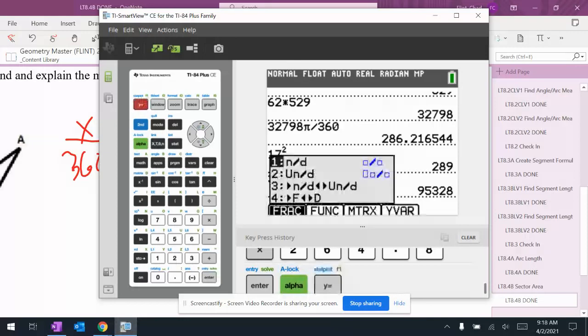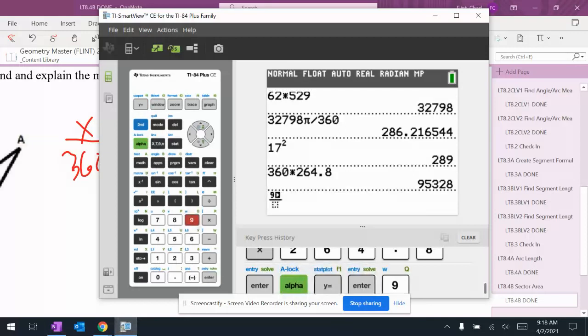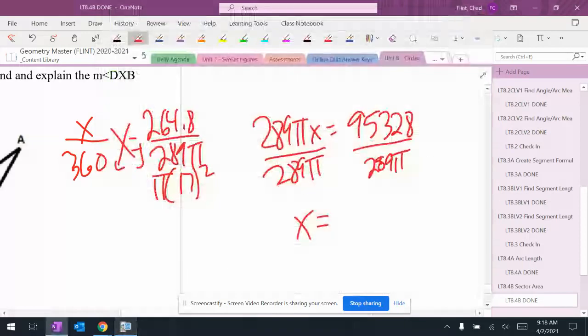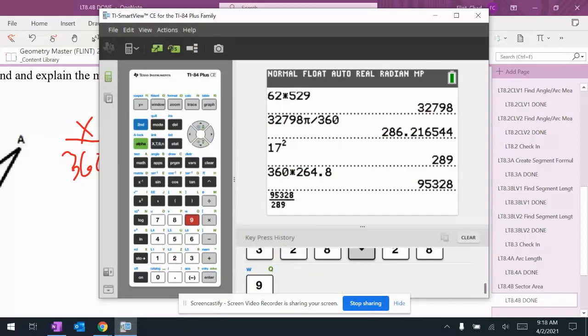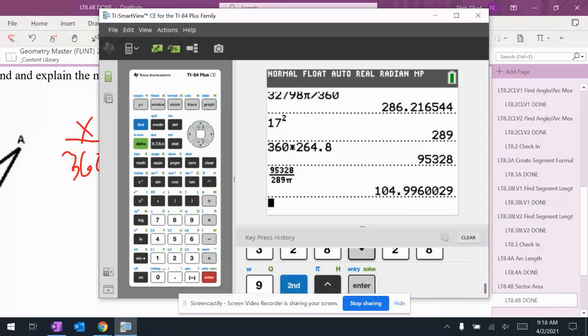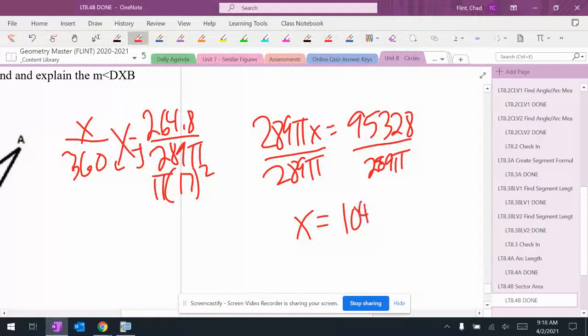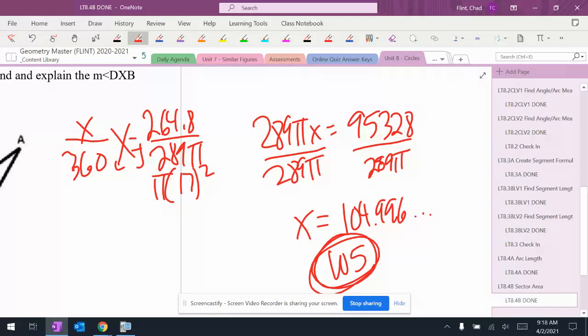So 95,328 over 289 pi gives me 104.996, which means my angle would be 105 degrees to the nearest degree.